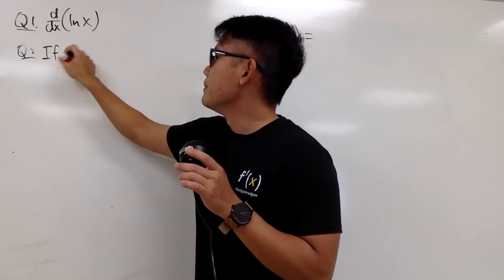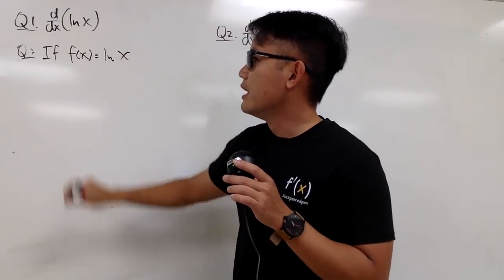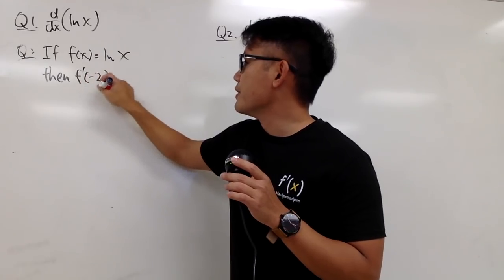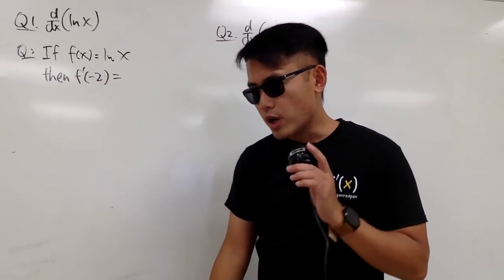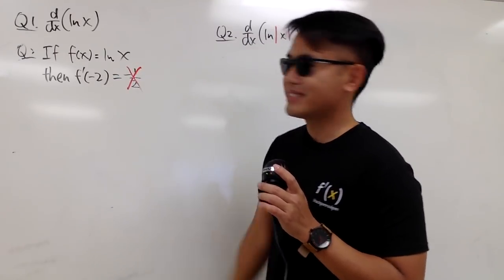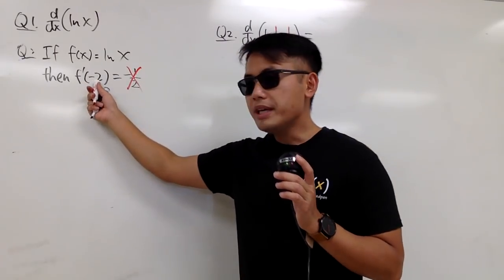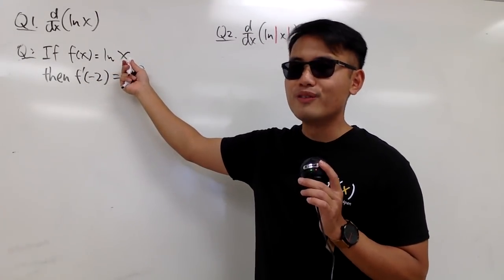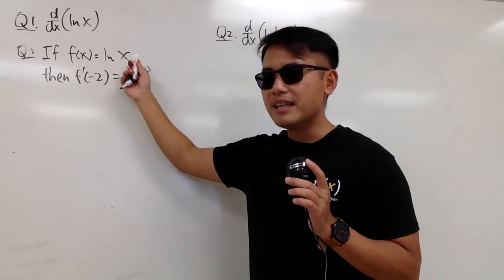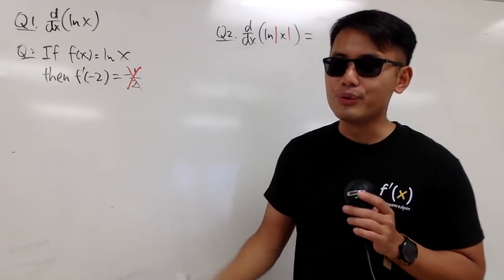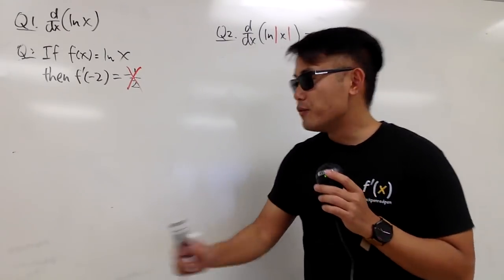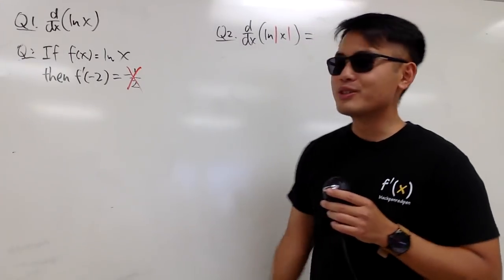Suppose I define f of x to be ln x. What's f prime of negative 2? If you say the answer is negative 1 half, unfortunately this is actually not correct. Because we cannot even plug in negative 2 into the original function. We are keeping everything real in this video — ln of a negative number does not have any real value. It does have some complex value, but we are not talking about complex numbers here. Therefore, this is not even a legitimate question in the first place.